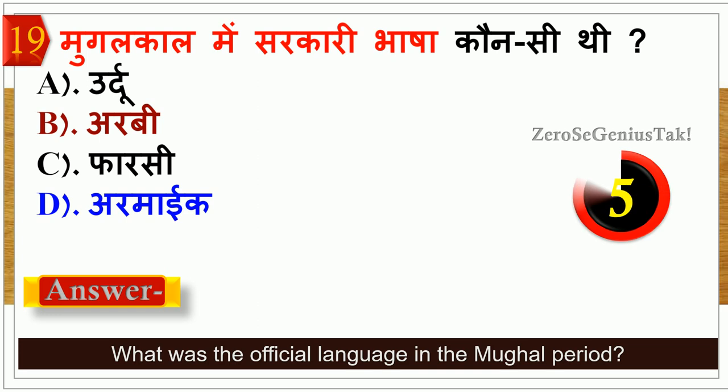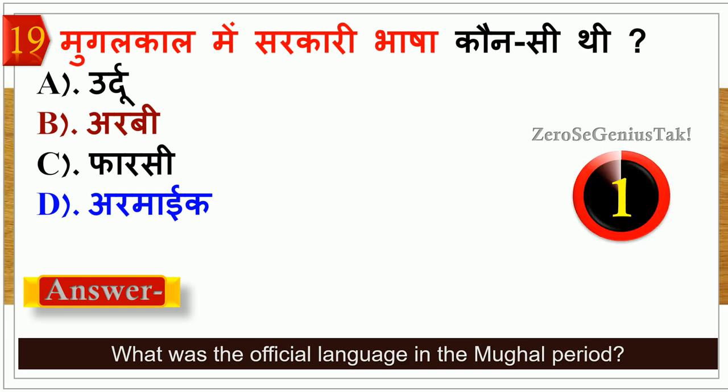This question asks: which language was the official government language in Mughal Kaal? Urdu, Arabi, Farsi or Armai? The right answer is option number C — Farsi. Important question.